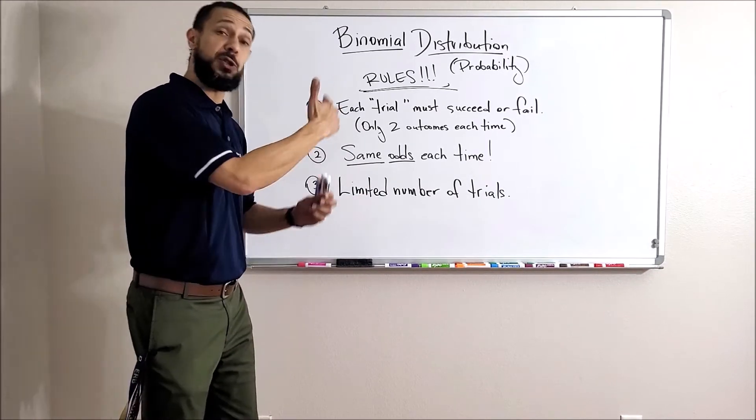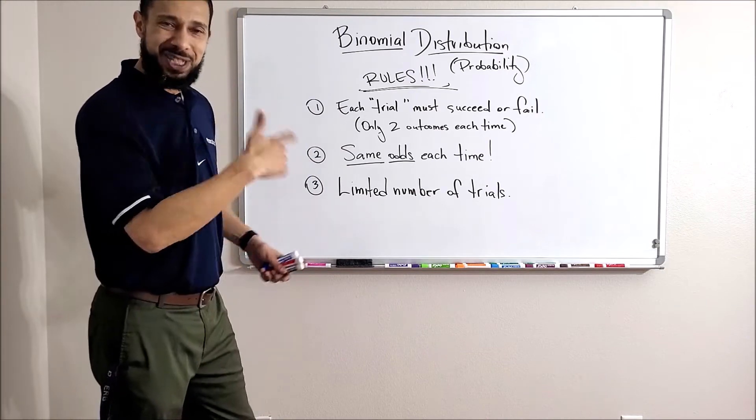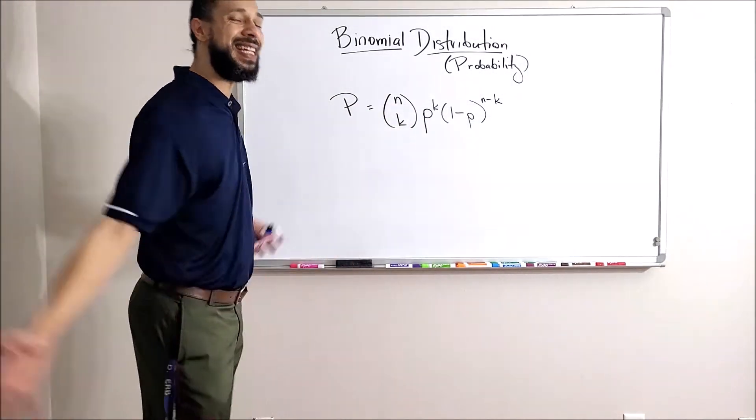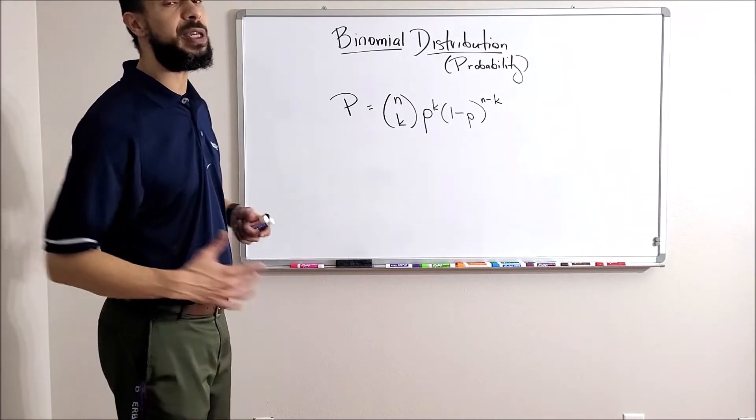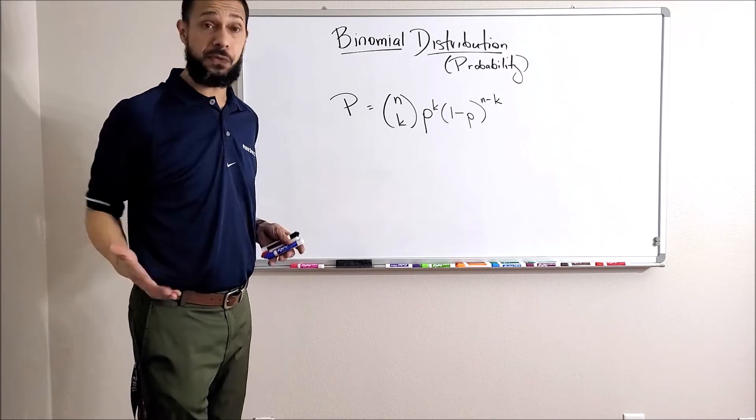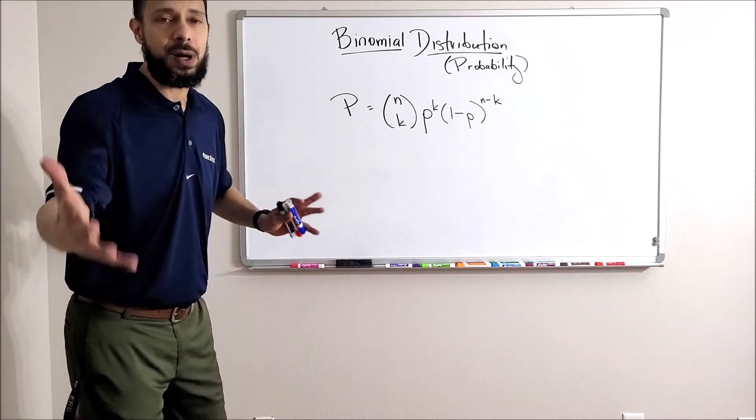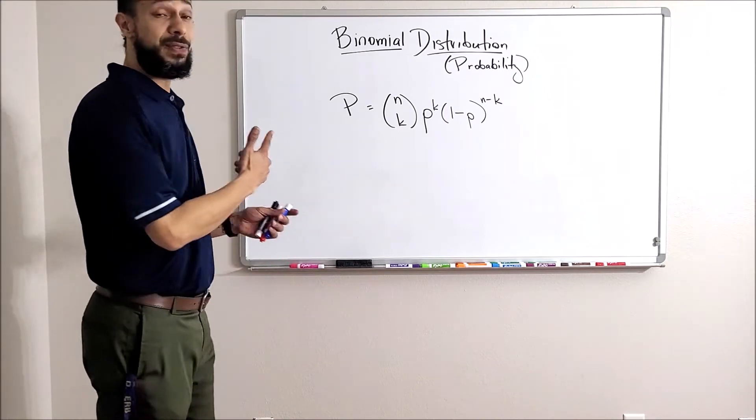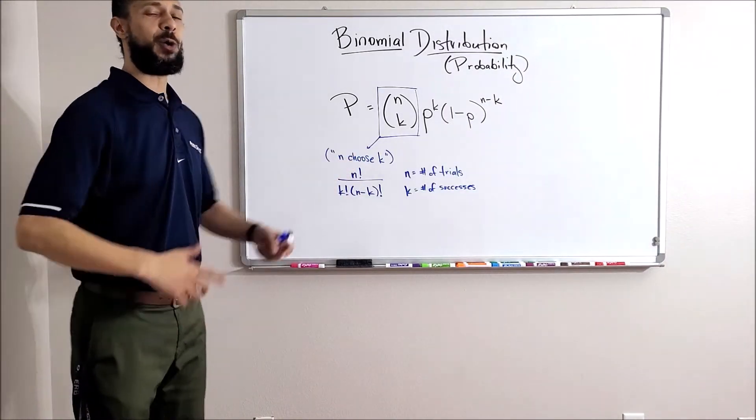If your situation follows these rules, we're going to use this formula. This is it. This is the formula that's going to give you the probability P of whatever you're looking for. Let's break down the parts of this formula real quick.